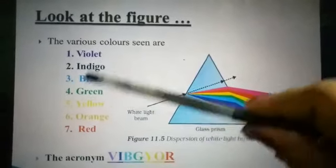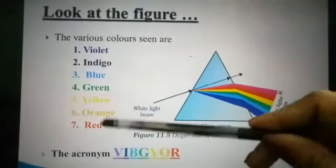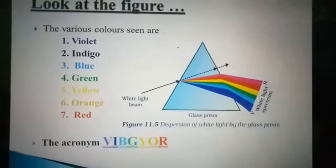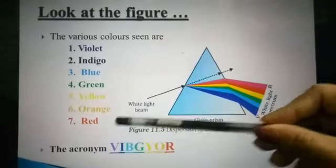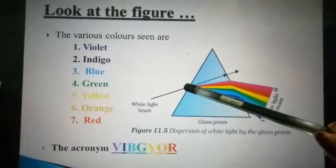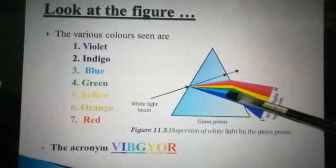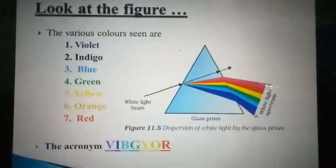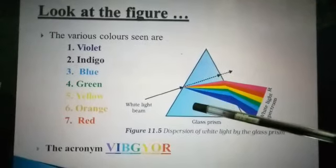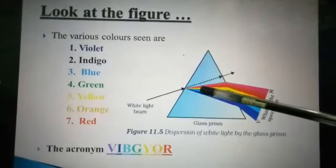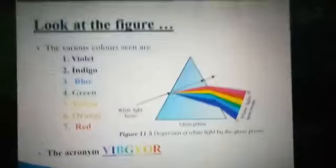White light is a combination of all colors. When you combine all colors, white light is formed. Each color has its own wavelength. When white light falls on the prism face and moves into another medium, each wavelength has its own speed. Naturally their speed varies, and that causes deviation — there is variation in their speed.